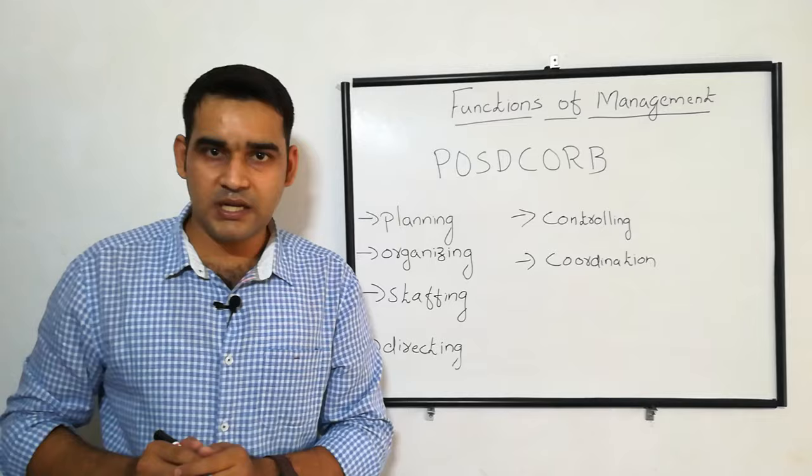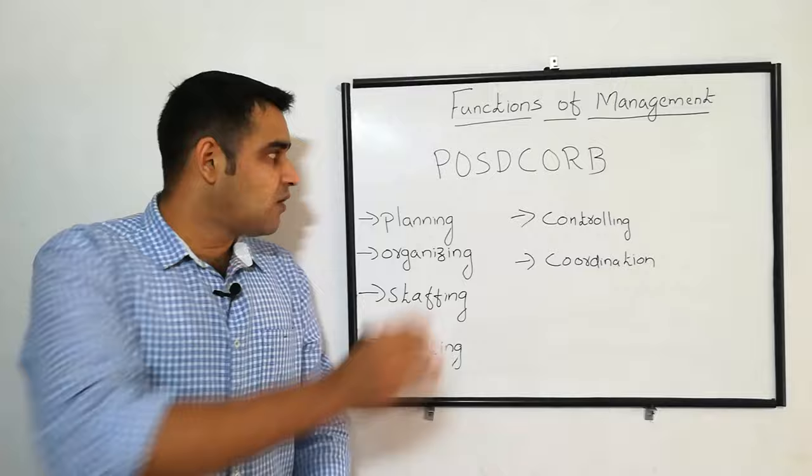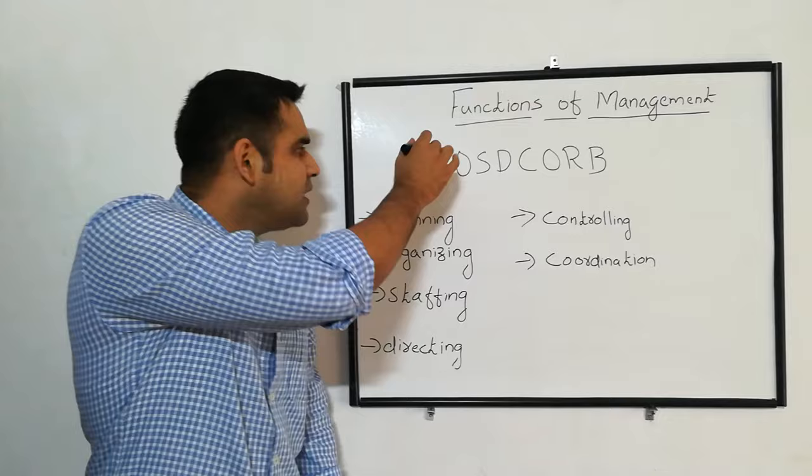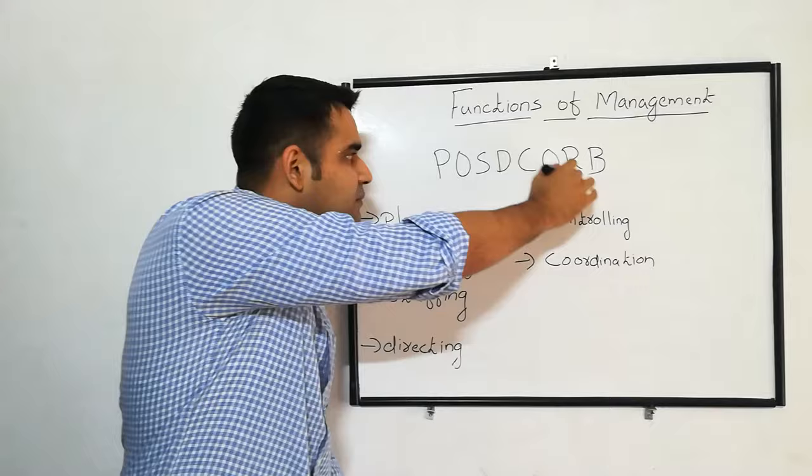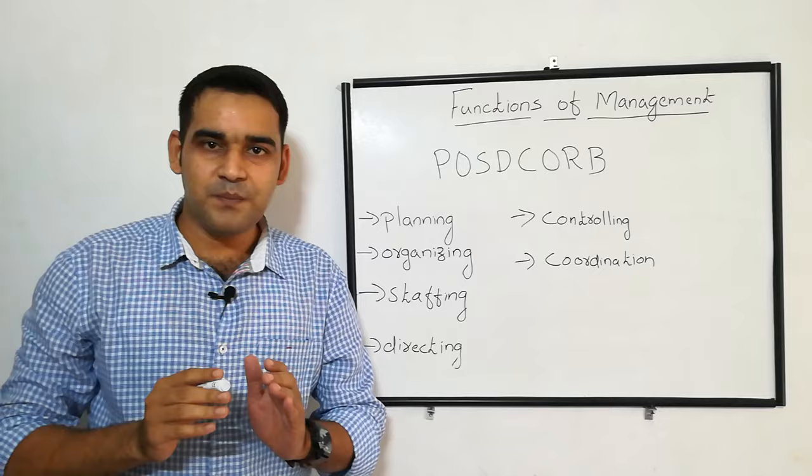That is regarding functions of management. Keep in mind the mnemonic POSDCORB: P for planning, O for organizing, S for staffing, D for directing, C for coordination, R for reporting, B for budgeting. Reporting and budgeting come under controlling. That is all regarding today's topic. If you have any suggestions, please comment below and we will meet soon with another video. Thank you and goodbye.